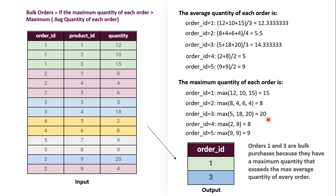So the sample output should contain order ID 1 and order ID 3. Now you understand the input, the output, the approach, and the key metrics. We will now work on MySQL Workbench and write a SQL query to identify the bulk orders — finding the average quantity of each order, the maximum quantity of each order, and comparing maximum quantity with the maximum of the average quantity.